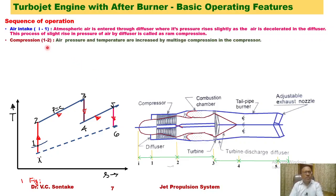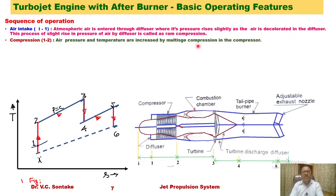The compression process (1 to 2) is also represented by a vertical line on the T-S diagram, since it is ideally considered isentropic. It takes place in the compressor. During this process, air pressure and temperature are increased by multi-stage compression.